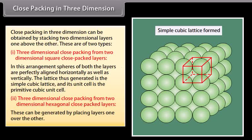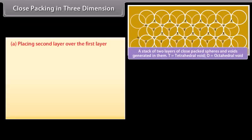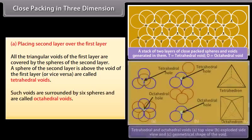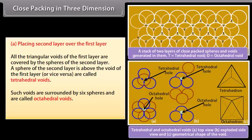Second, 3-dimensional close packing from 2-dimensional hexagonal close packed layers: these can be generated by placing layers one over the other. Placing the second layer over the first layer, all the triangular voids of the first layer are covered by the spheres of the second layer. A sphere of the second layer above the void of the first layer creates tetrahedral voids. Voids surrounded by 6 spheres are called octahedral voids.